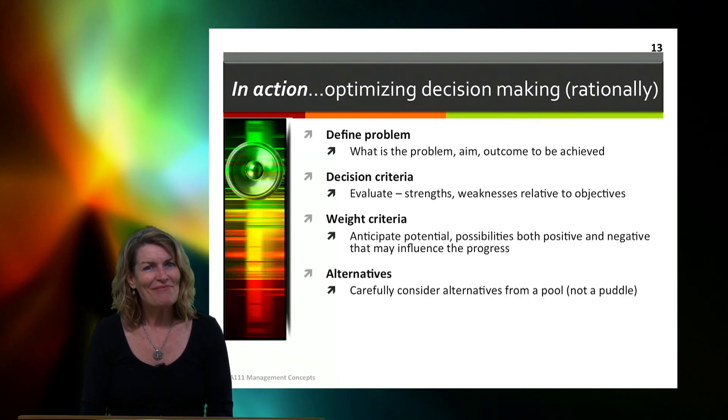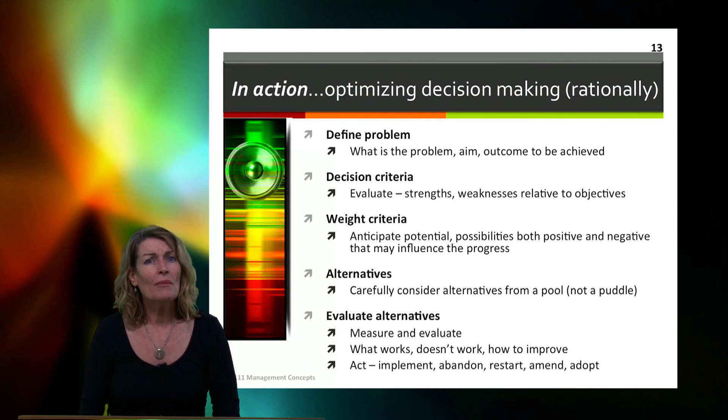Alternatives. Perhaps when we're looking at this role, like straight away I've got an image in my head of what that role looks like. Now that limits my ideas on who I'd be looking at. So we need to look at alternatives, we need to broaden our horizons, consider those alternatives so we can create a pool and not a puddle of applicants. Now when we look at those alternatives, we need to measure and evaluate. So what works, what doesn't work, how to improve. And then we need to act upon that. We need to implement it, abandon it, restart, amend and adopt.